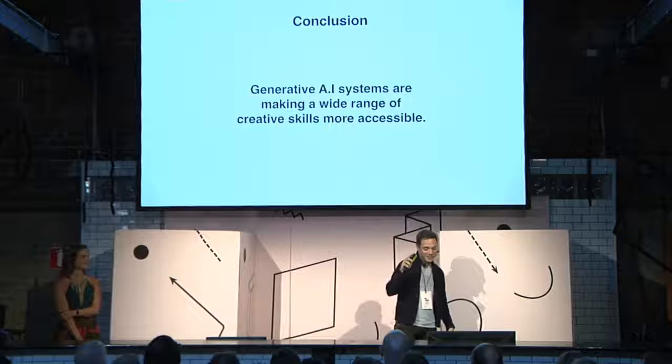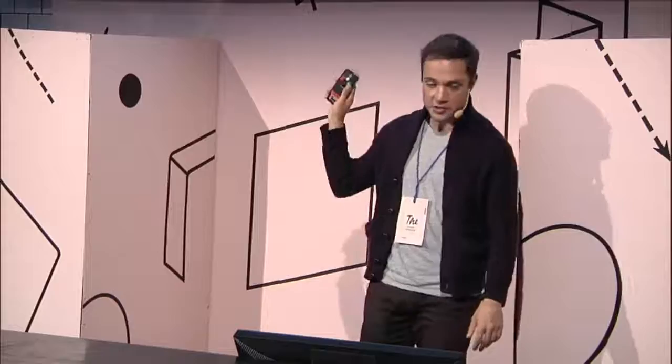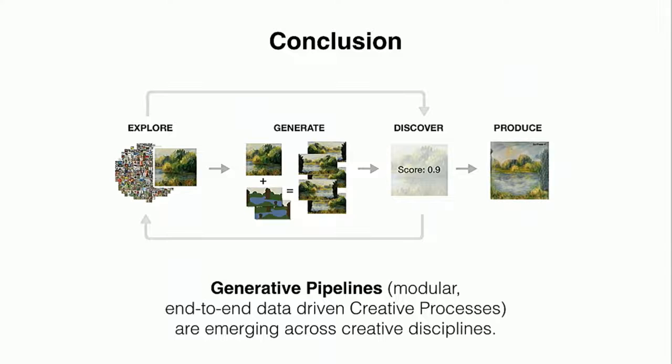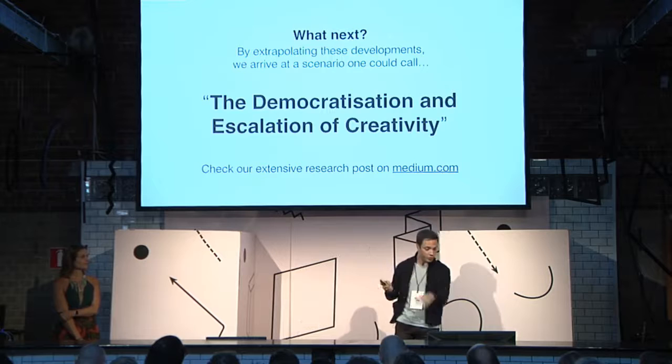In conclusion: generative AI systems are making a wide range of creative tasks radically more accessible — this is just the beginning, but you can see the cost curve between novices and experts coming down radically. What this will look like in production is what we call generative pipelines: end-to-end data-driven creative processes, turning messy untestable things in your creative pipeline into something with real benefits. And this might lead to a scenario which is the democratization and escalation of creativity — we've written half a book about it. Thank you very much, and I love you all.